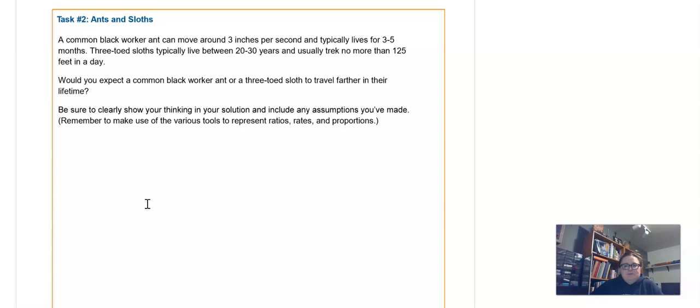Alright, ants and sloths. This one's gonna get messy fast. But we're comparing, so we've got a black worker ant can move about 3 inches per second, and typically lives 3 to 5 months. A sloth lives 20 to 30 years, but goes about 125 feet in a day. So there's a couple of different things going on here. For one thing, they're giving us an age range, and for another, they give us totally different units on both things. So we're obviously going to have to practice our unit conversions, and we're going to have to pick. Do we compare lower bound or upper bound, or do we compare lower bound to upper bound?